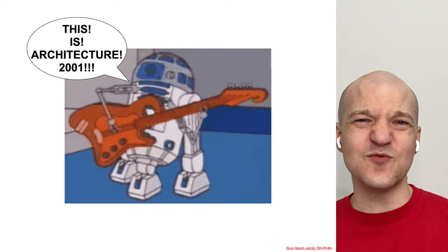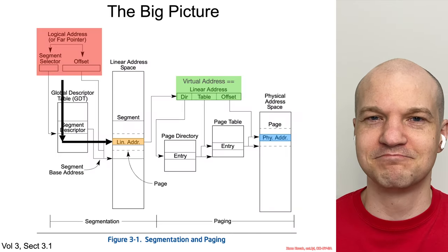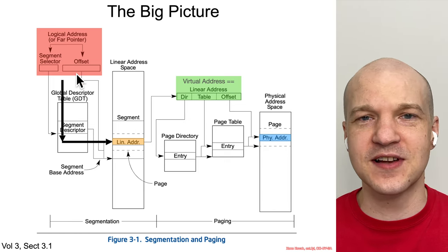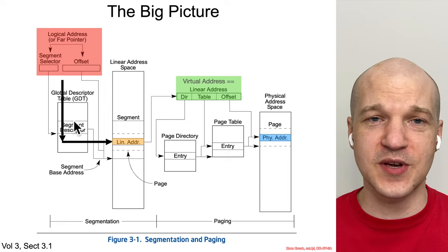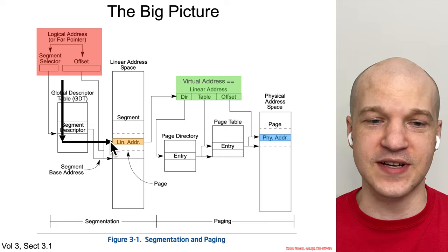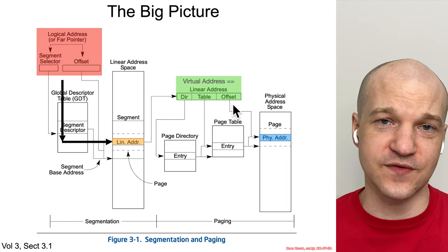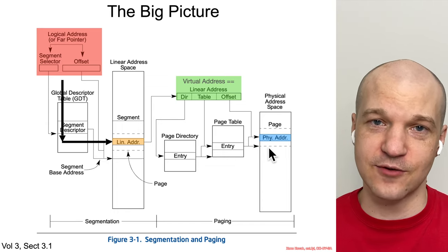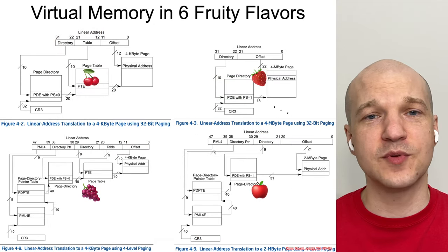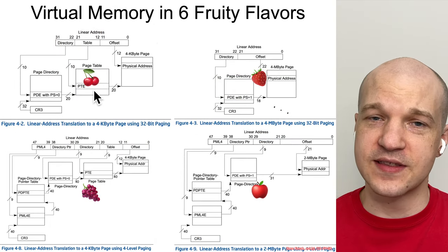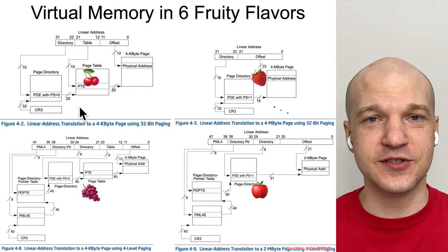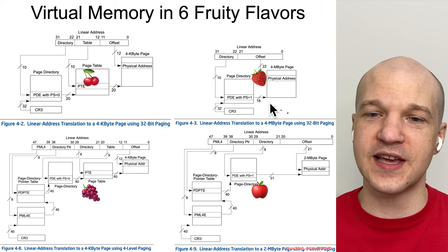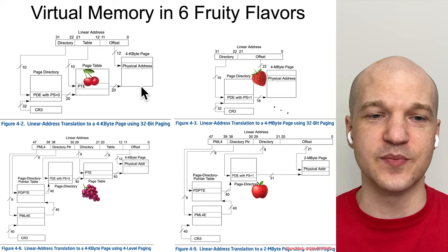This is Architecture 2001. Big picture: you saw logical addresses, which were segment selectors and offsets; you saw global descriptor tables as the means by which logical addresses were converted to linear addresses; you saw linear addresses used as virtual addresses, translated through page tables to find physical addresses on RAM. We saw virtual memory in six flavors — the simplest original version was a 32-bit linear address space to 32-bit physical address space, and how you could skip a level of paging to get a four-megabyte page instead of a four-kilobyte page.